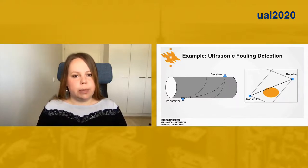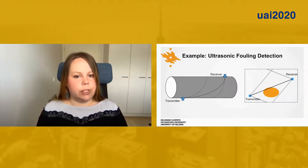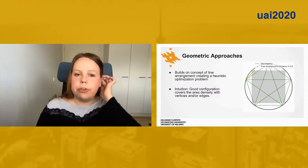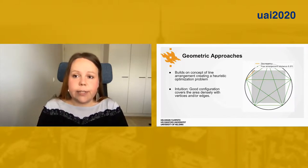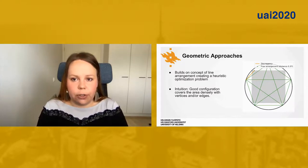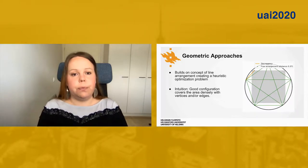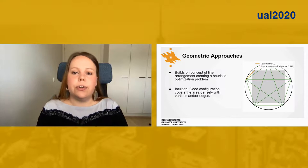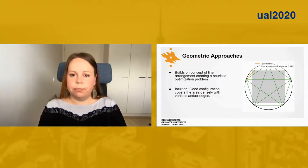We focus on designing the sensor placements before making any measurements, though some of the methods could be extended for sequential problems also. We give two alternative approaches for sensor placement. Geometric approaches ignore the GP and instead base the placement design on the concept of line arrangement, finding a sensor set such that the arrangement spans the whole area well. We can use black-box optimization to optimize a fitness function based on, for example, distances between vertices or edges. In this picture the grey square is the area of interest and sensors are placed on the black circle around it. For five sensors we unsurprisingly recover a regular polygon, and for regular shapes we can often use existing configurations from the literature.